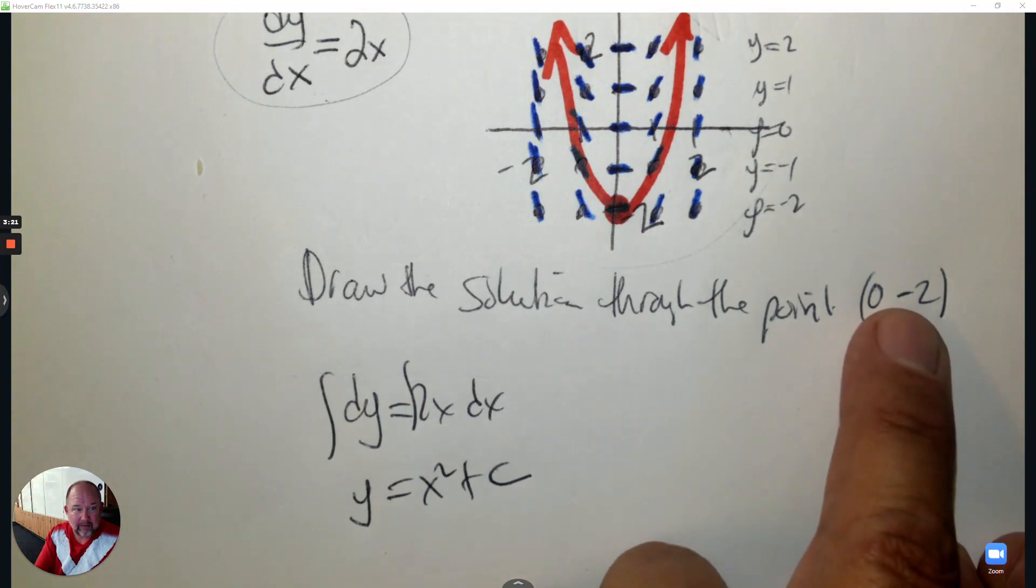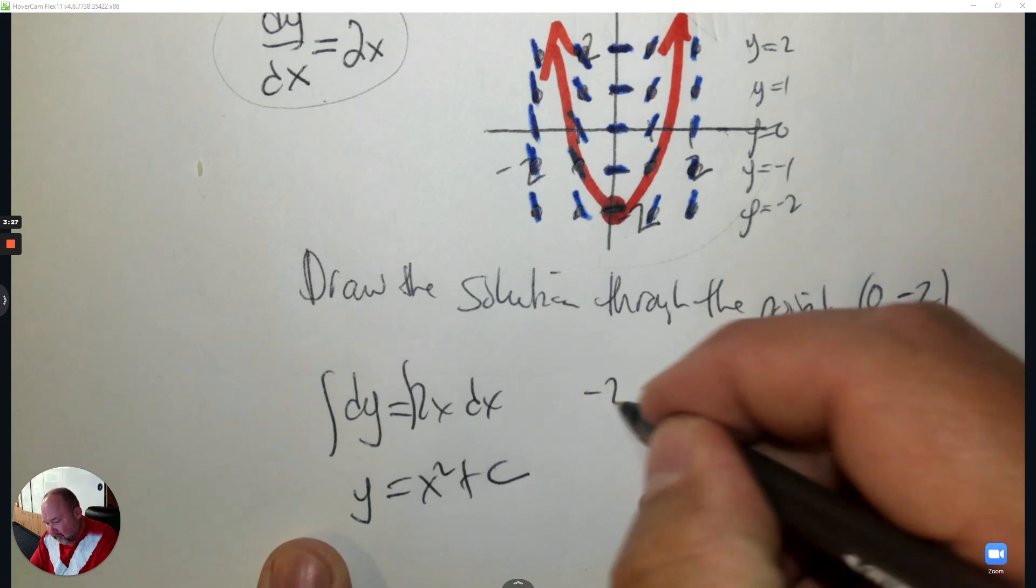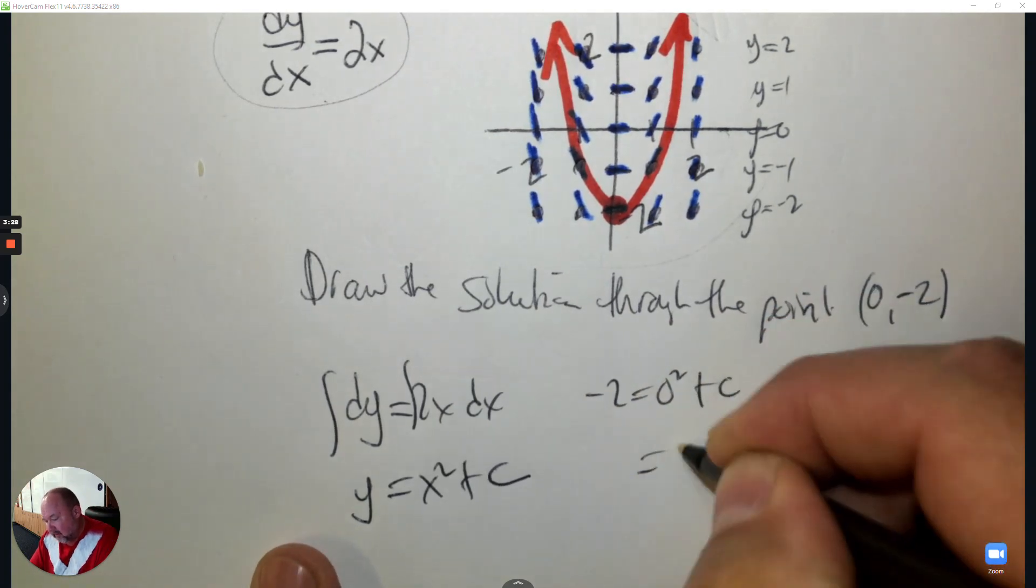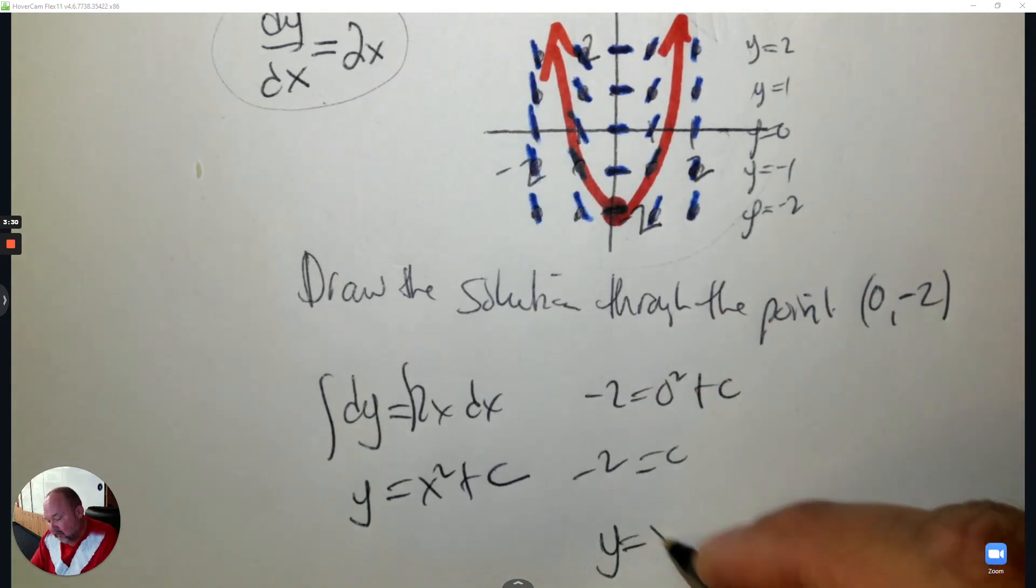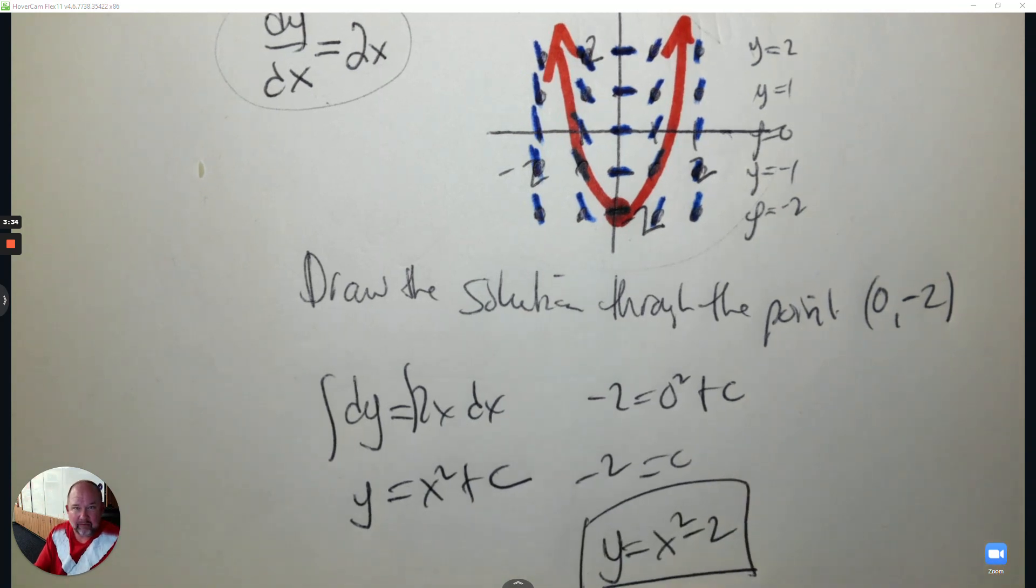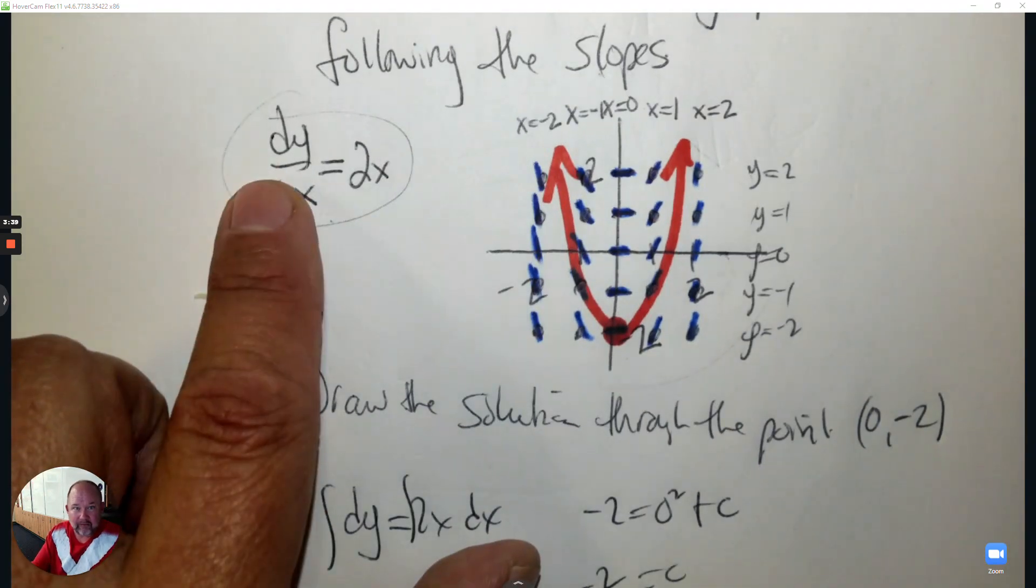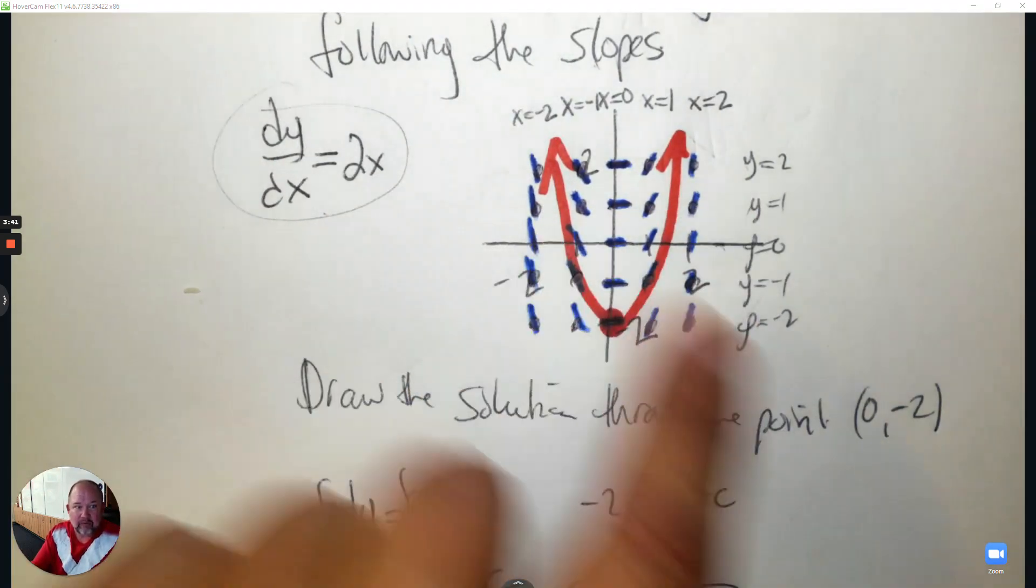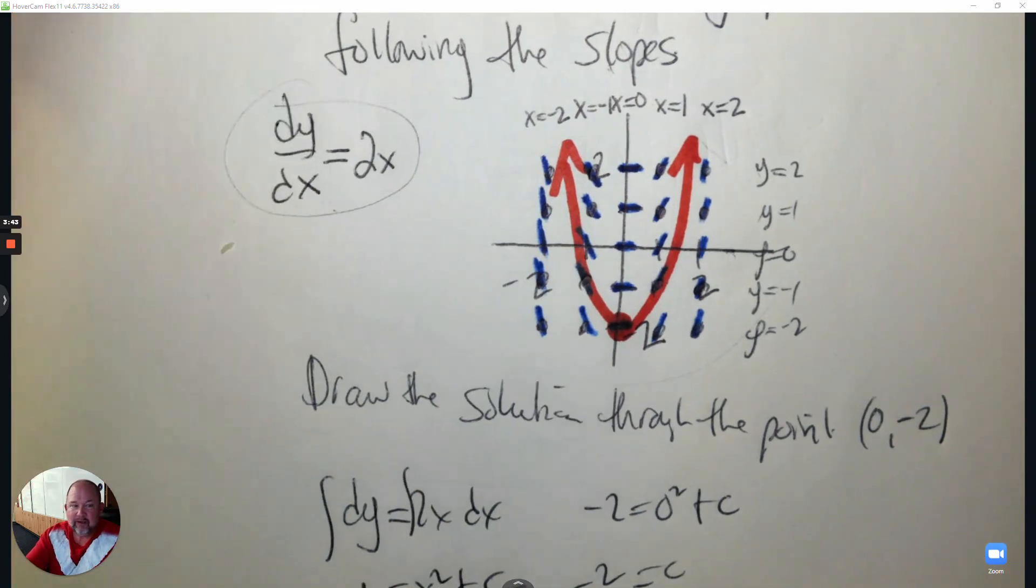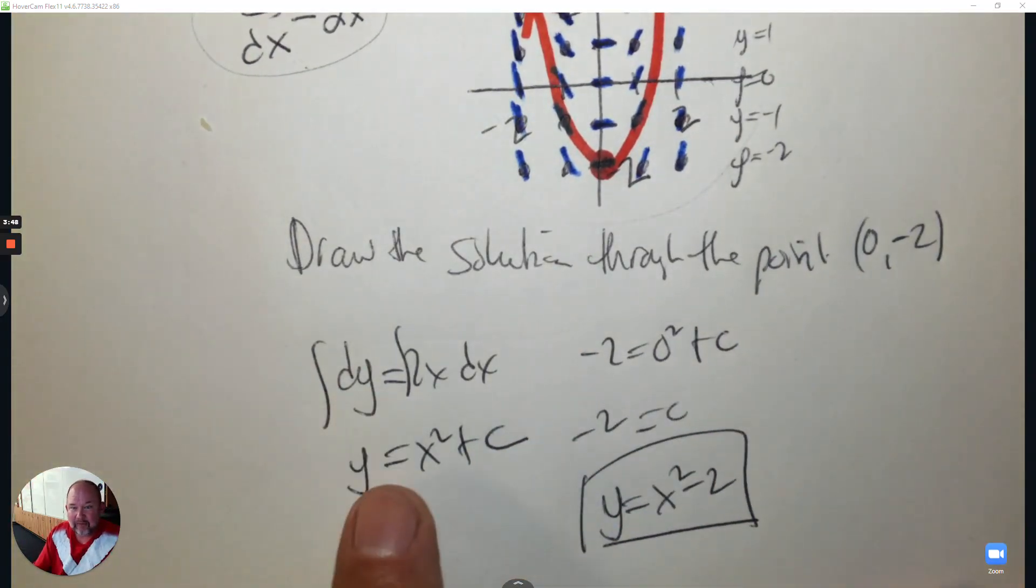I can plug in the point I used here. So x is 0 and y is negative 2. Then I can solve for c and realize I just graphed y equals x squared minus 2 using calculus tools. I took the differential equation, made a slope field, drew a solution through 0 comma negative 2, then plugged in those points and separated the variables and integrated.